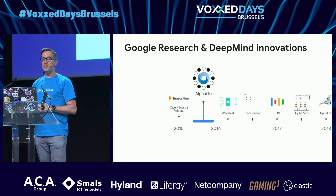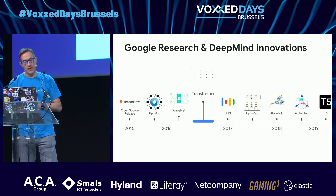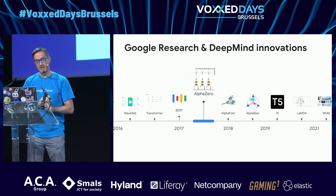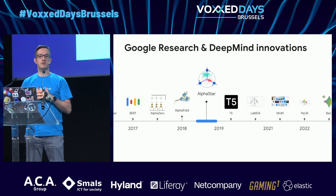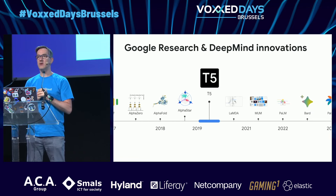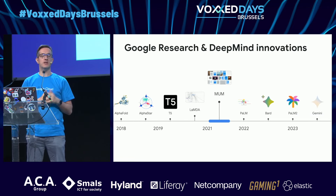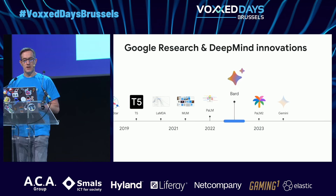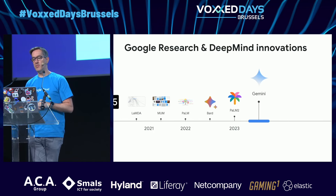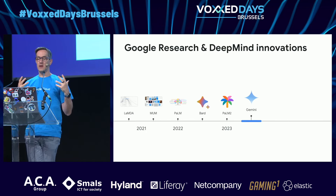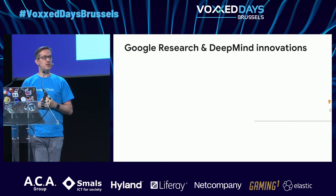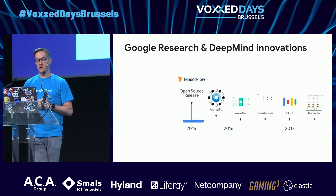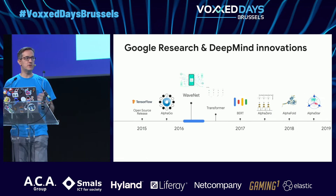The big innovation that came roughly in 2016–2017 was a research paper from Google called the Transformers — that's the name of the new neural network architecture devised by this paper.